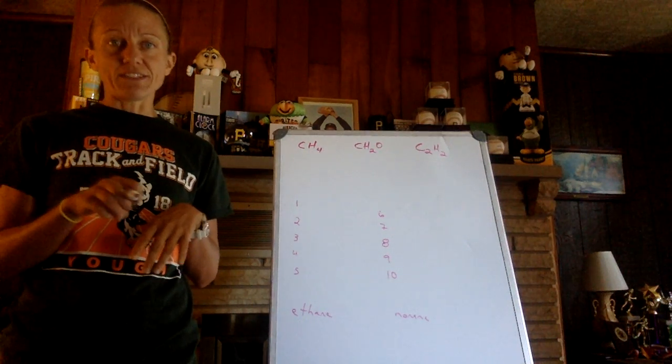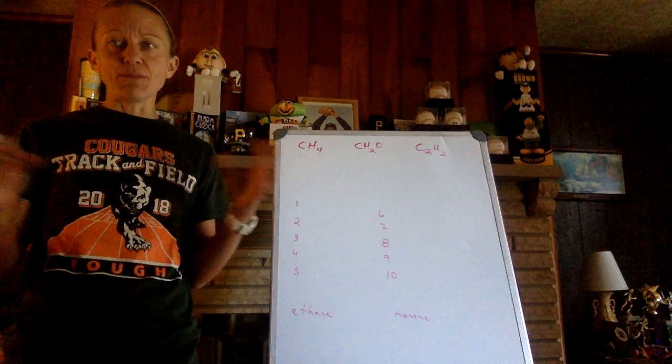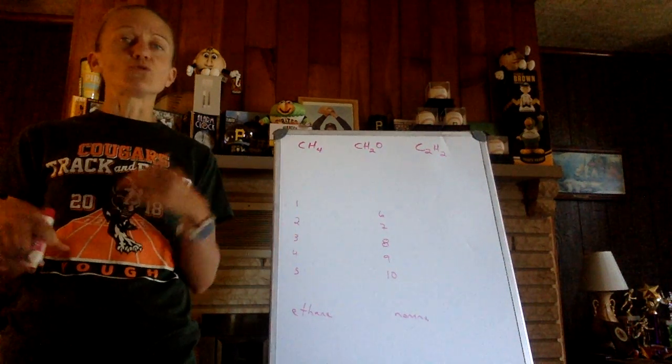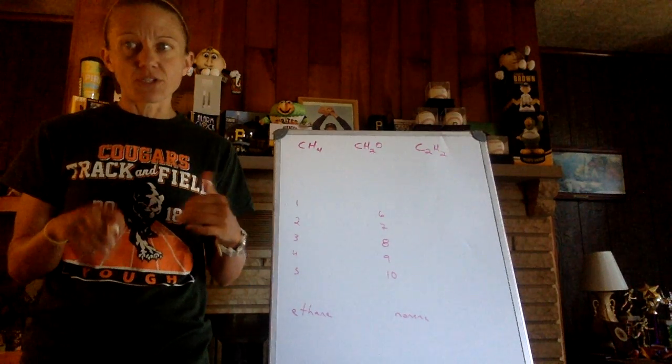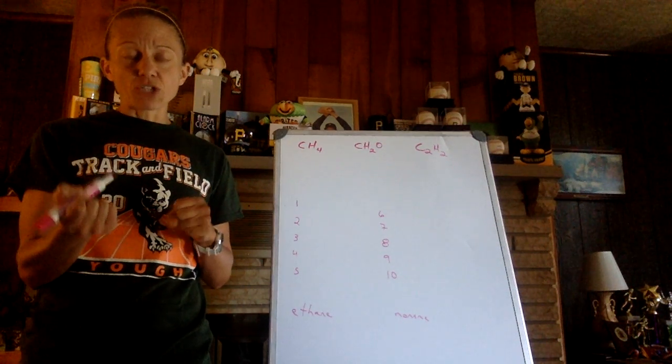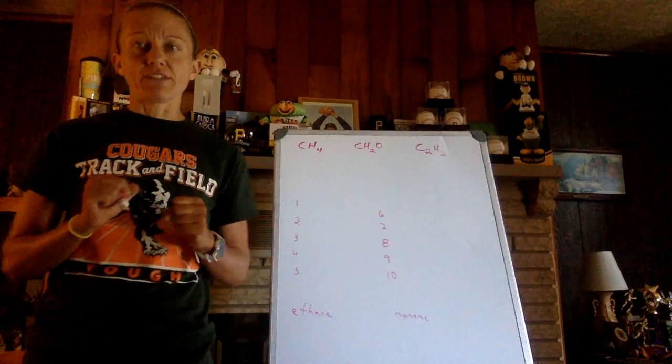Kind of bonds: covalent, meaning they share electrons. Non-metals do this. And when we're looking at organic compounds, we are looking at non-metals. Electrons carbon has to contribute - it's in group 14, four valence electrons.